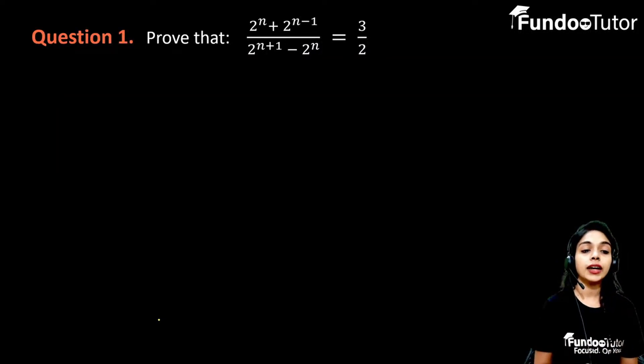First question is prove that 2 to the power n plus 2 to the power n minus 1 divided by 2 to the power n plus 1 minus 2 to the power n, which equals 3 by 2.